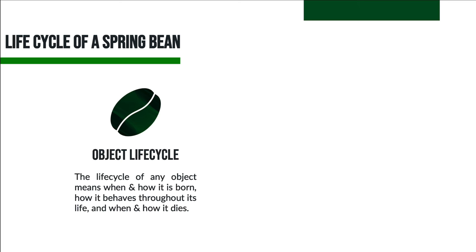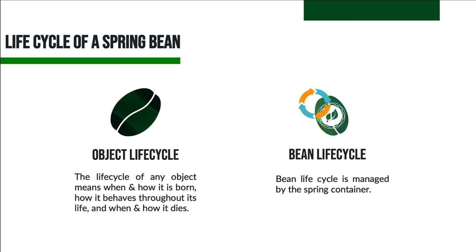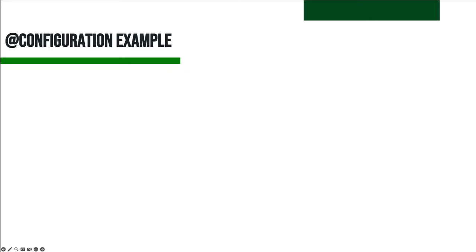The lifecycle of a Spring bean refers to when and how the bean is instantiated, what action it performs throughout its life, and when and how it is destroyed. The bean lifecycle is managed by the Spring container. When we run the program, first the Spring container gets started, then the container creates the instance of a bean as per request, dependencies are injected, and finally the bean is destroyed when the Spring container is closed.